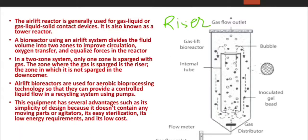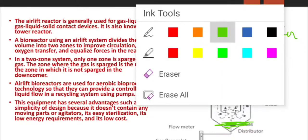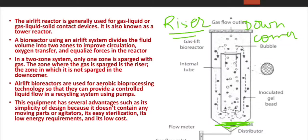The two zones are the riser zone and the downcomer zone. A gas distributor or sparger is placed at the bottom. Air is pumped into the fermenter and goes upward. Along with the bubbling of the gas, the medium moves upward in the riser zone and then downward in the downcomer zone.